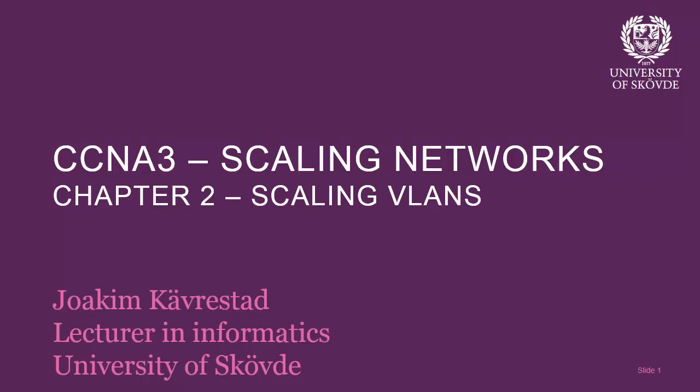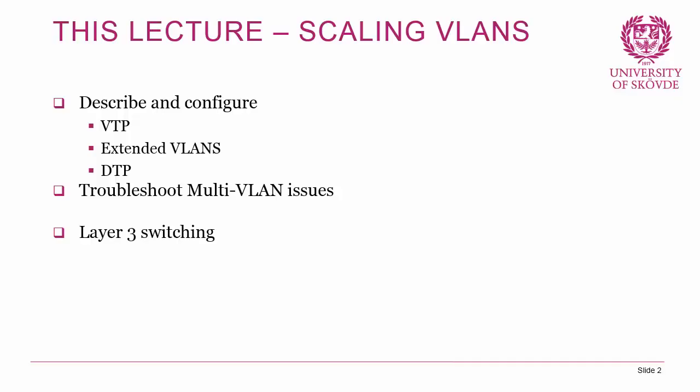Welcome to this second lecture in CCNA 3 version 6 with Joachim Schäbrestad from the University of Sjövde. The topic is chapter 2 in the CCNA 3 Cisco material: scaling networks. We're going to describe and configure VTP, extended VLANs, and DTP, then look at troubleshooting multi-VLAN issues and layer 3 switching. This lecture is designed using context-based micro training, combining theory with emphasis on demonstration and configuration.